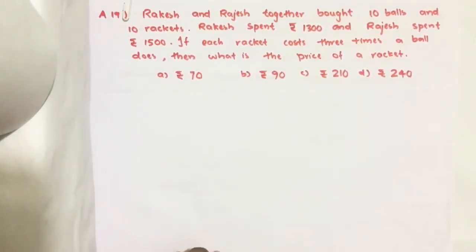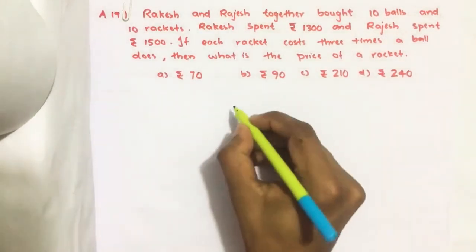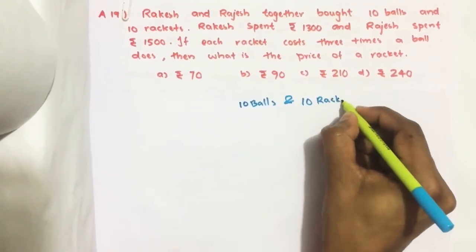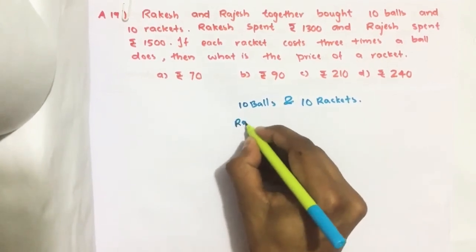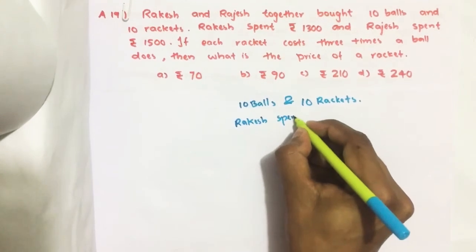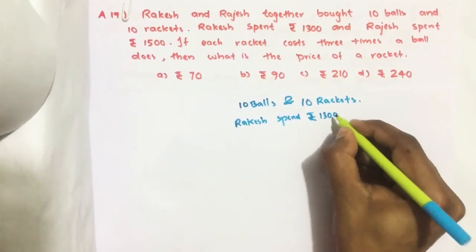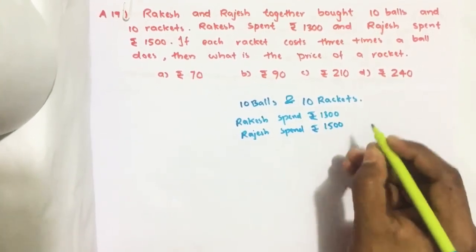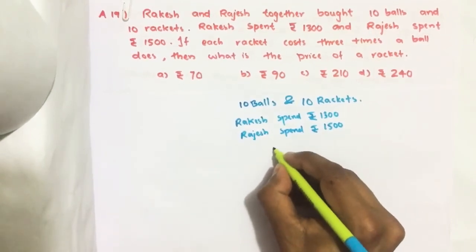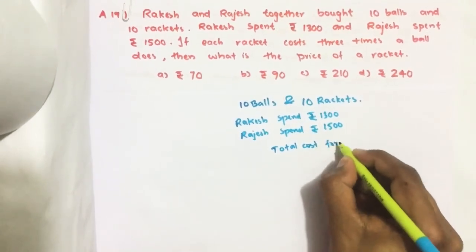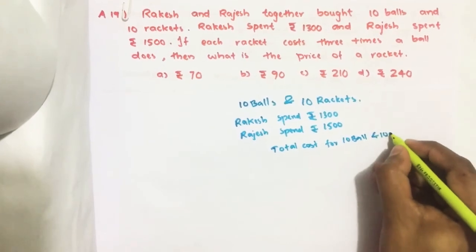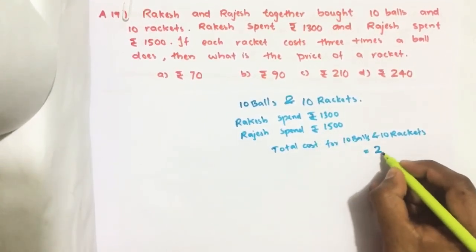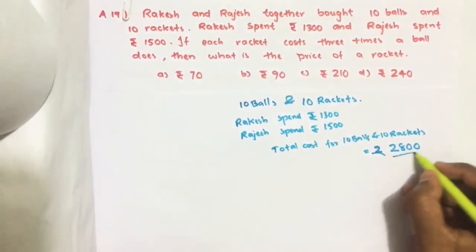So here Ragesh and Rajesh bought 10 balls and 10 rackets. Ragesh spent rupees 1300 and Rajesh spent rupees 1500. So what is the total cost? 10 balls and 10 rackets equal to 1300 plus 1500, that is equal to rupees 2800. This is the total cost they spent.